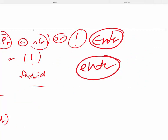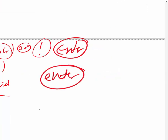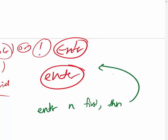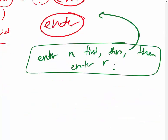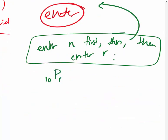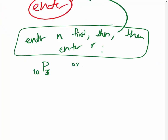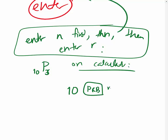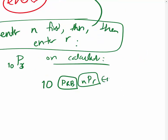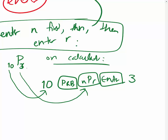For both calculators, you enter N first, then find the NPR or NCR button, then enter R. For example, to calculate 10 permutations of 3: type 10, go to PRB, grab NPR, press Enter, then press 3. It's confusing - you press the left number first, find NPR or NCR, then the right number.